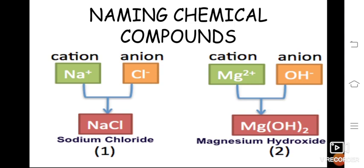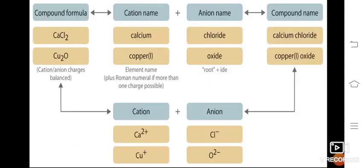Naming a chemical compound: whatever the compound, it has positive and negative charge particles. For example, sodium chloride — molecular formula NaCl, where Na+ is the cation and Cl- is the anion. For magnesium hydroxide, the formula is Mg(OH)2, where Mg has a valency of 2 and OH has a valency of 1. Other examples: calcium chloride CaCl2 and Cu2O, where calcium valency is 2 and copper valency is 1.